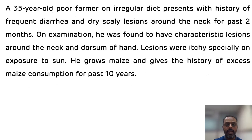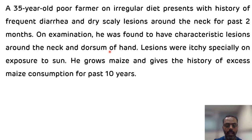The case description is: a 35-year-old poor farmer on an irregular diet presents with a history of frequent diarrhea and dry scaly lesions around the neck for the past two months. On examination, he was found to have characteristic lesions around the neck and dorsum of the hand. Lesions were itchy, especially on exposure to the sun. He grows maize and gives a history of excess maize consumption for the past 10 years.